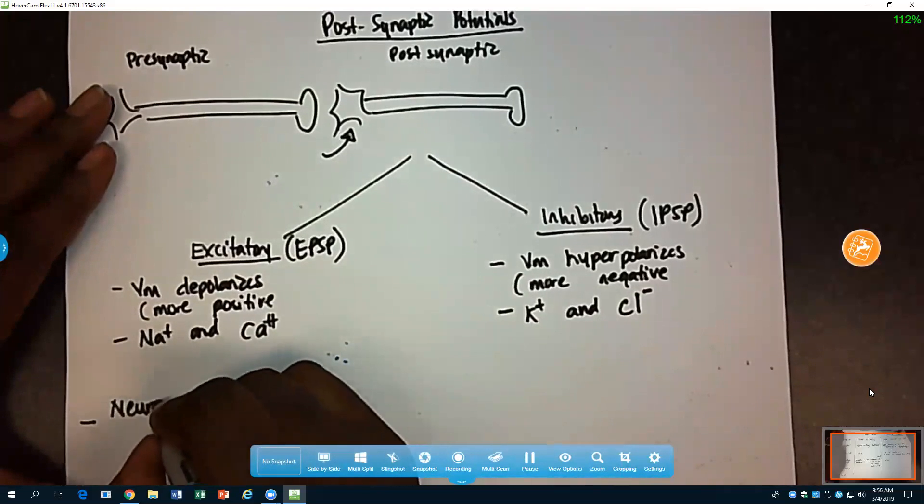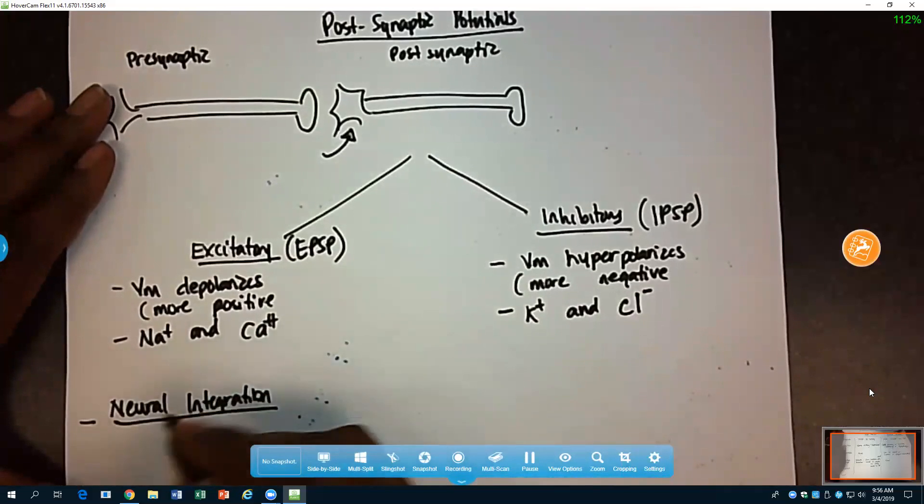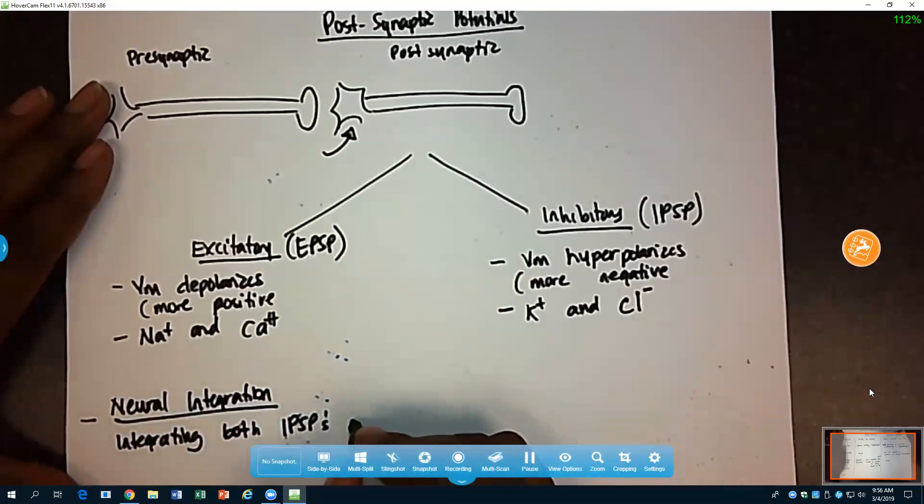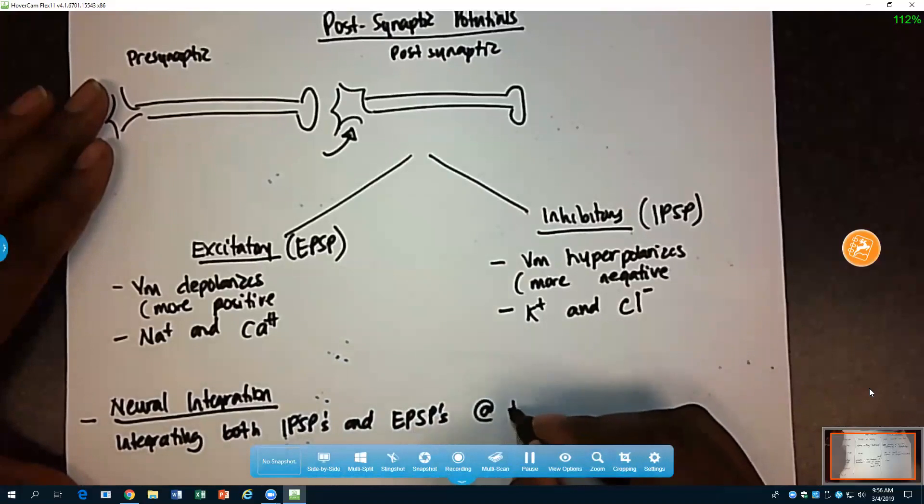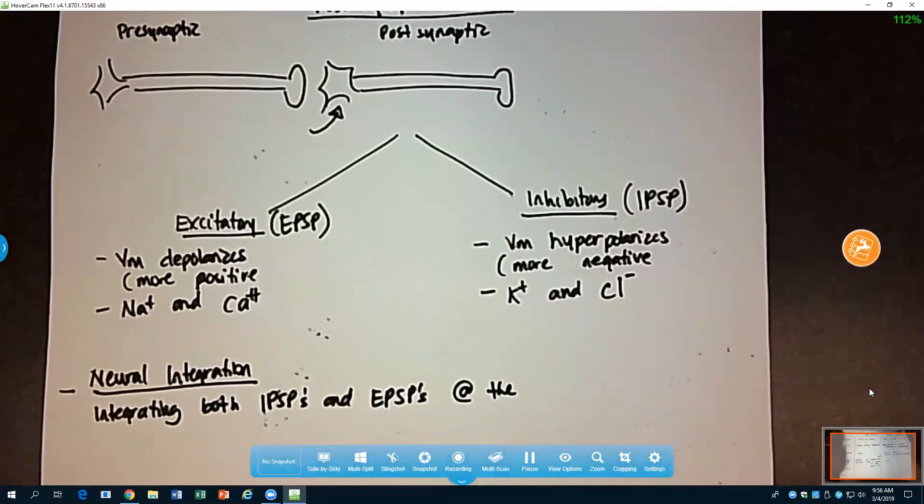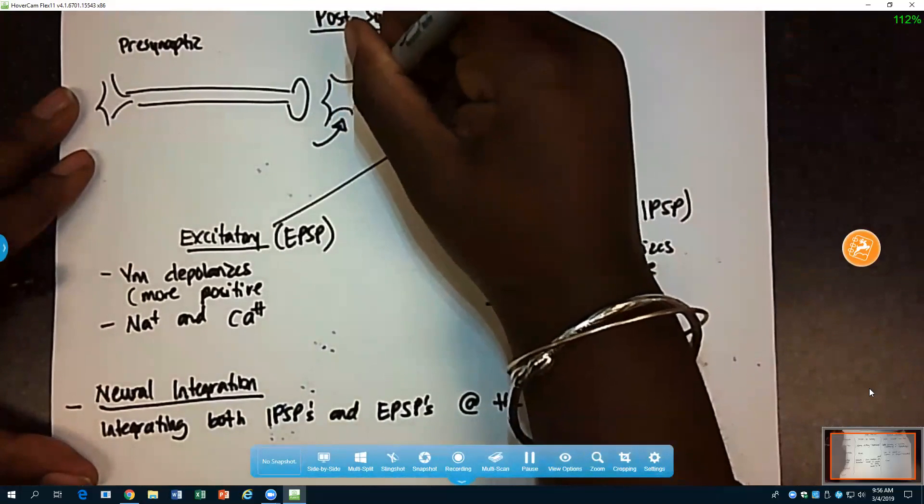All right, so neural integration was basically integrating both IPSPs and EPSPs at what region of the axon? What region of the axon do we integrate all of these signals? The axon hillock. So I'll make a note here. This region.